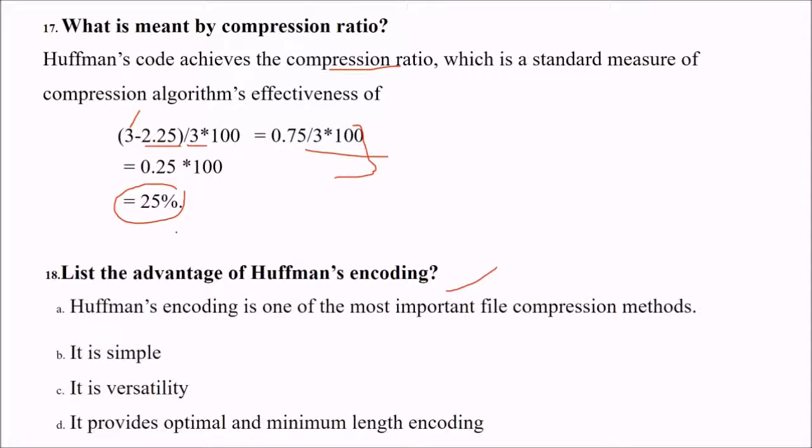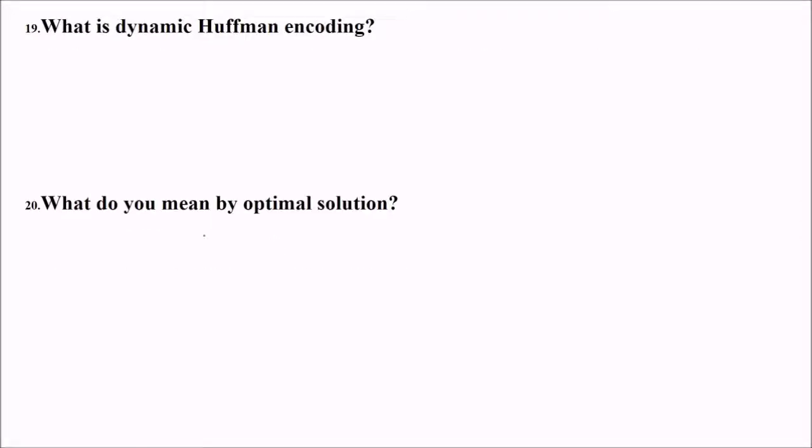Advantages of Huffman encoding. First of all it is a compression method, most important compression method. Quite simple, versatile, and it provides optimal and minimum length encoding (MLE).